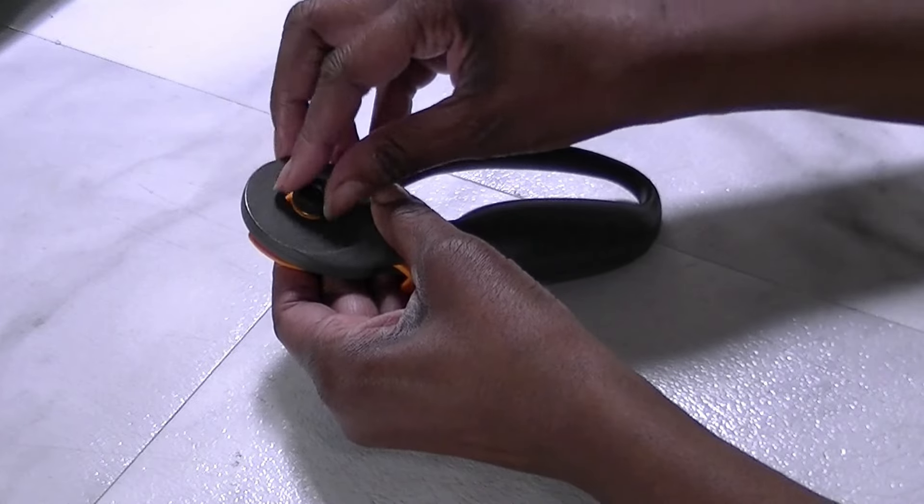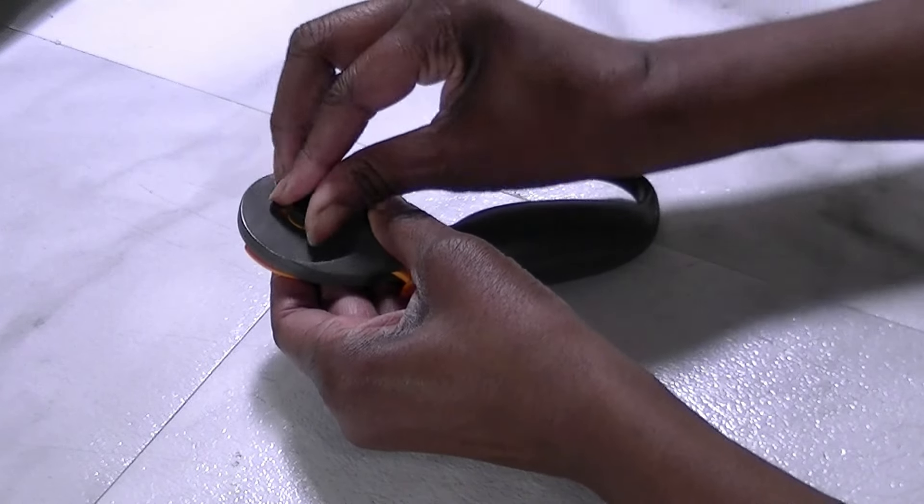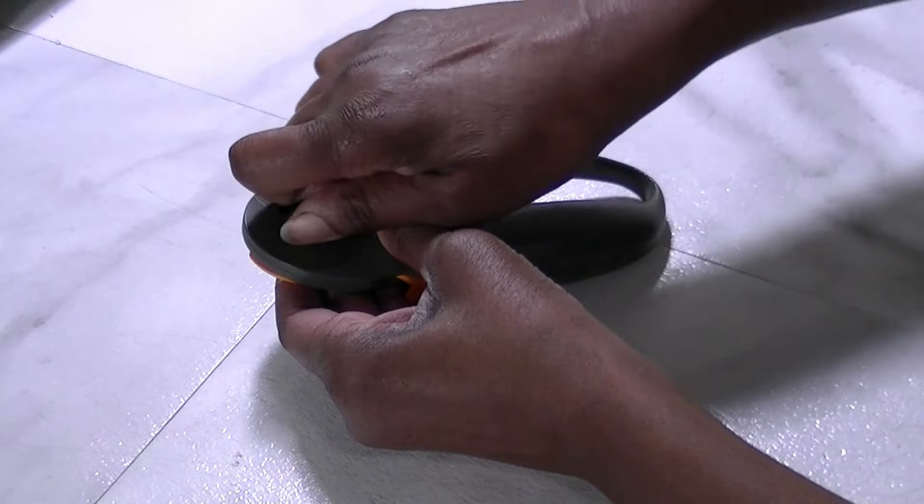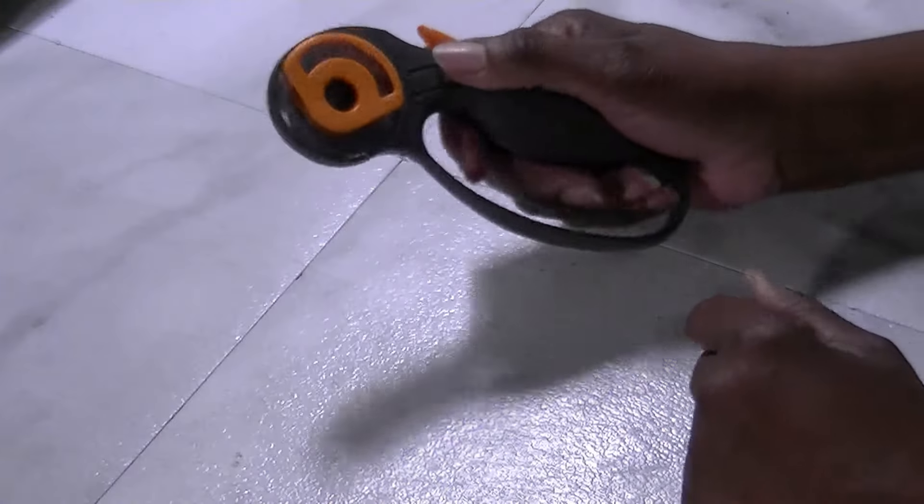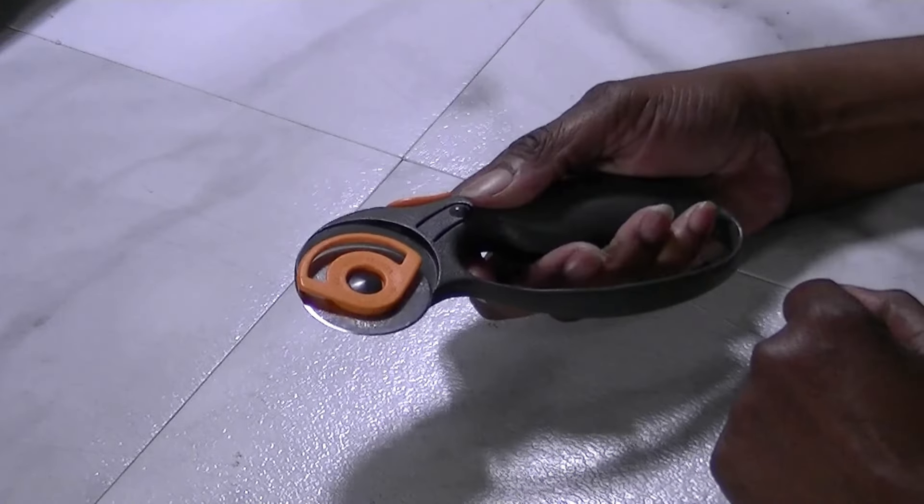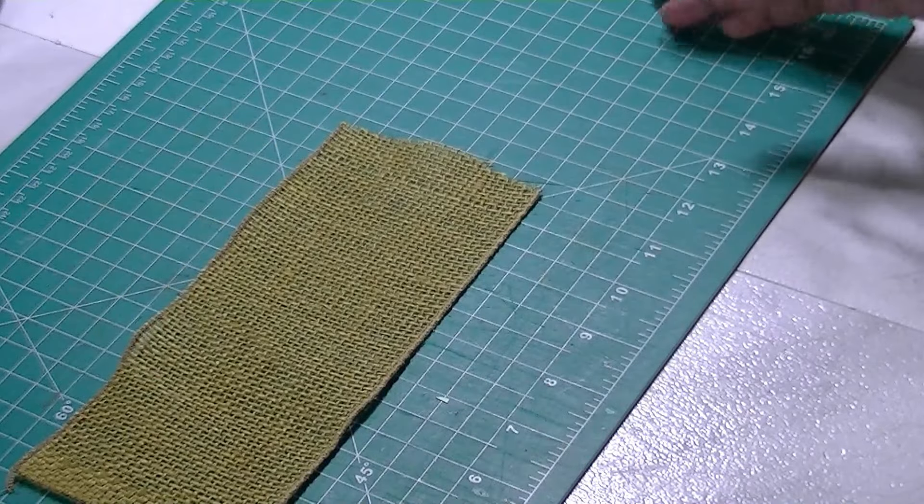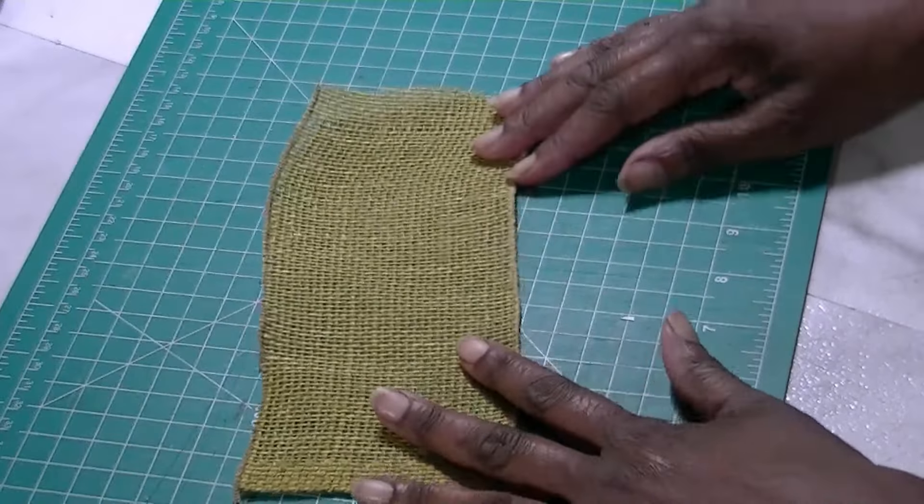You're just going to twist and keep twisting until it gets really tight. Now your cutter is ready. I'm just going to take a piece of fabric—I actually happen to have a piece of burlap here.